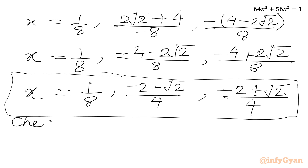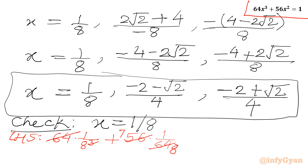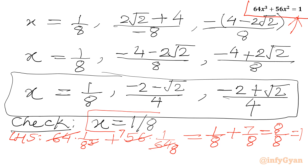Let us cross-examine the rational solution x = 1/8. LHS: 64 × (1/8)³ + 56 × (1/8)² = 64/512 + 56/64 = 1/8 + 7/8 = 8/8 = 1. And 1 is our RHS. So x = 1/8 is verified.